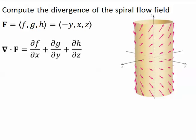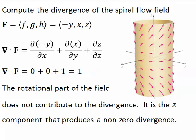Now, let's compute the divergence of the spiral flow field. Divergence is zero plus zero plus one. The rotational part of the field, that is the first two components, does not contribute to the divergence. It is the z component that produces a non-zero divergence.